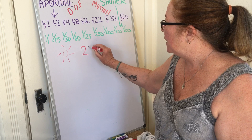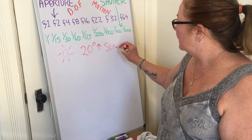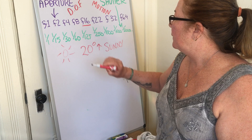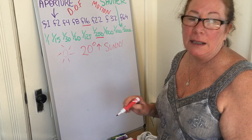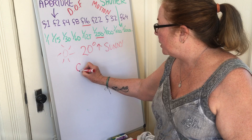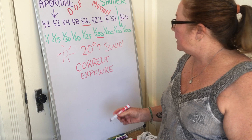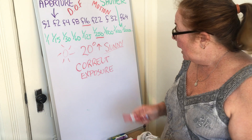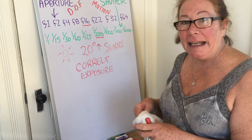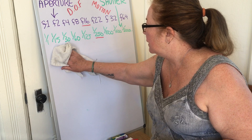The Sunny 16 rule: if the sun is shining and it's at least 20 degrees above the horizon — a sunny day — and you keep your aperture at f/16 and your shutter speed at 1/250th of a second, that's always going to create a correct exposure. That's your starting point for a lot of different lighting conditions.